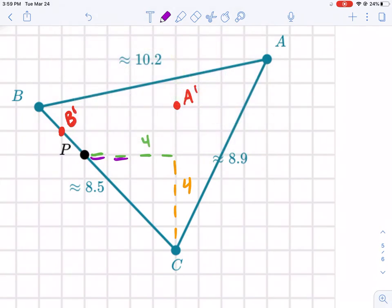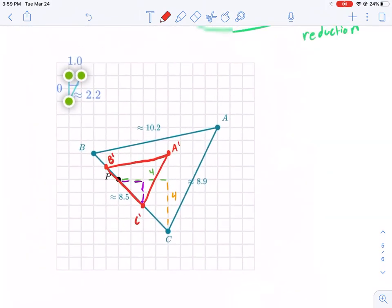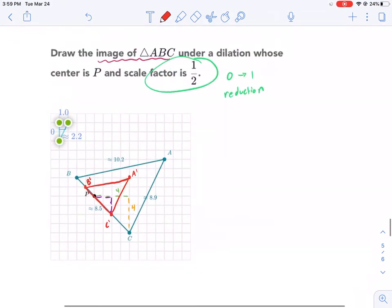So I'm going to go to the right two now, go down only two, and here's my new point, point C prime. Connect the dots, my favorite game. And there you go. That's another way to do this type of problem with dilations.